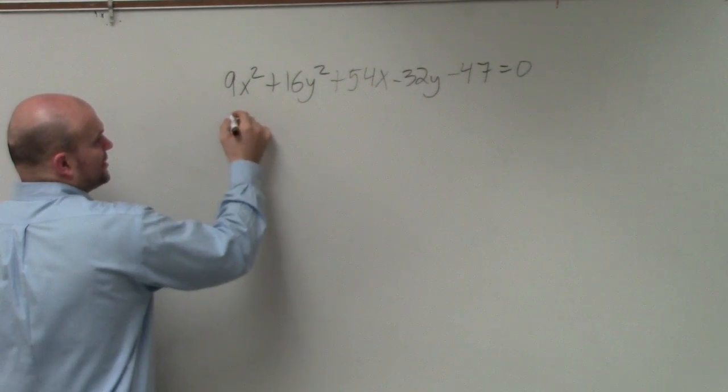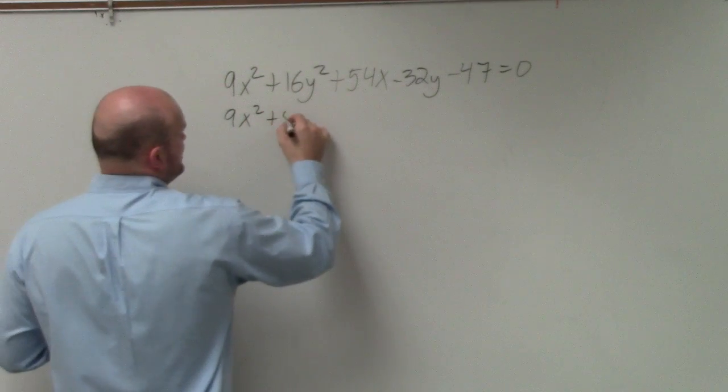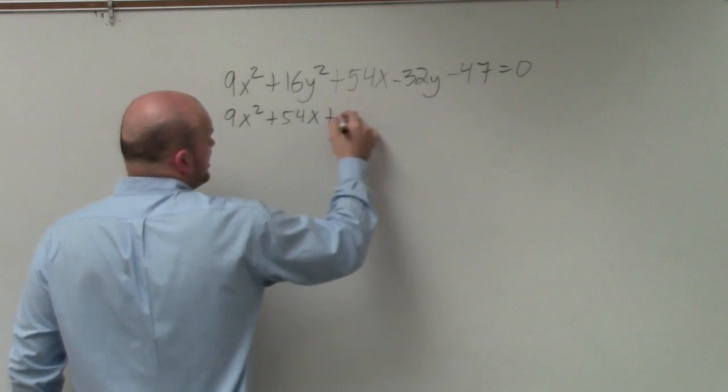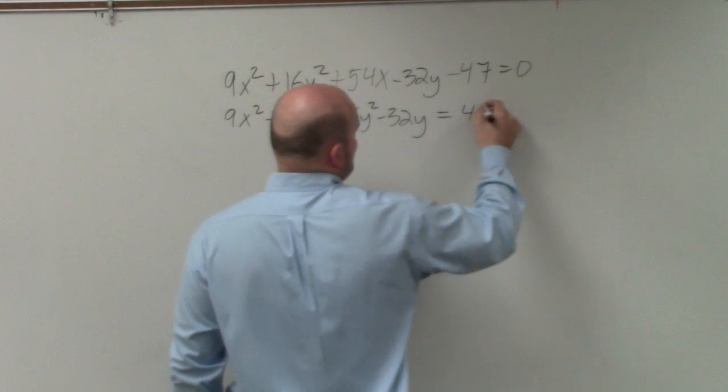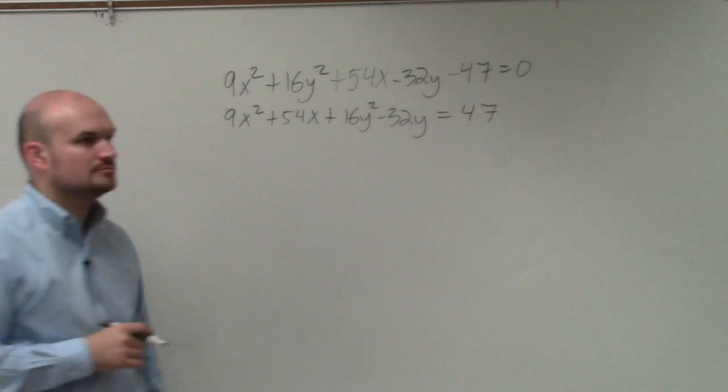So the first thing I'm going to do is I'm going to group the 9x squared plus 54x plus 16y squared minus 32y. And then I'm going to put the 47 on the other side.